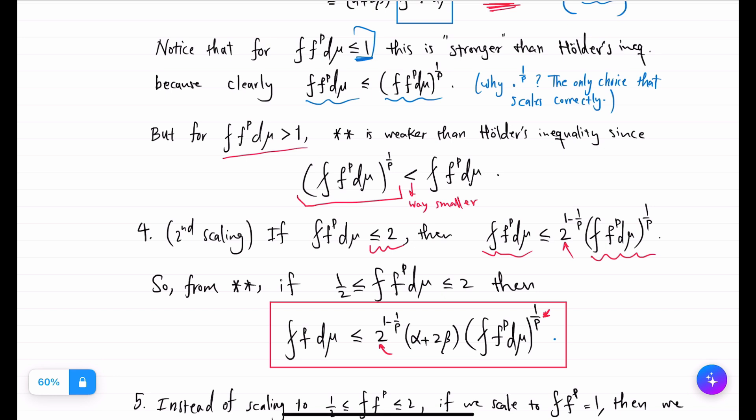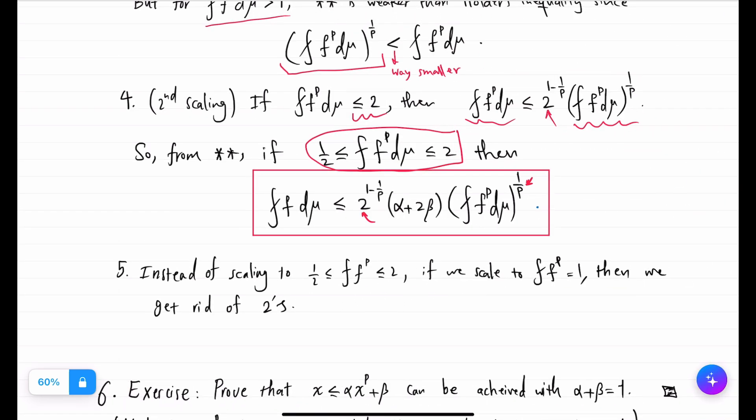Now we have some inequality that scales the right way. If this inequality holds for some f, it holds for all multiples λ of f, and therefore this restriction gets removed after all.